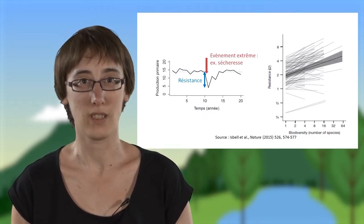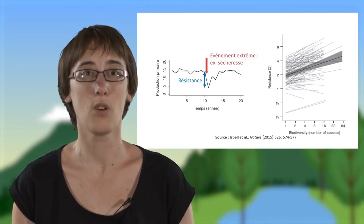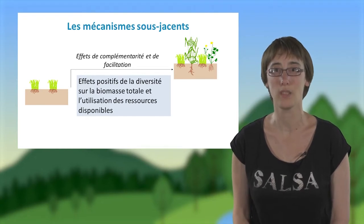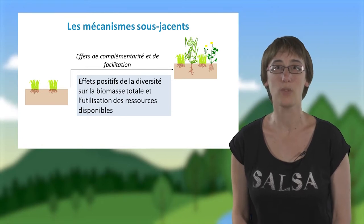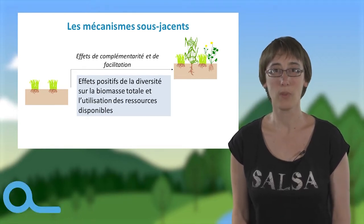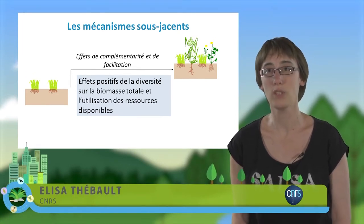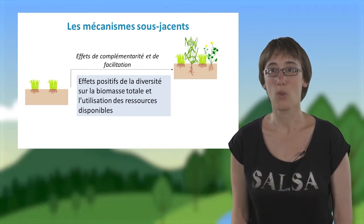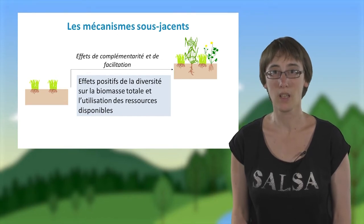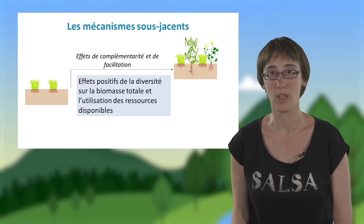Les communautés végétales de forte diversité sont ainsi caractérisées par une plus grande résistance aux événements climatiques extrêmes. Nous avons vu que la diversité affecte aussi bien la production primaire que la stabilité de cette production. Nous pouvons donc nous demander quels sont les mécanismes qui peuvent expliquer ces effets positifs de la diversité. Deux mécanismes sont avancés pour expliquer les effets positifs de la diversité des plantes sur la production primaire et sur la biomasse végétale : des interactions de facilitation entre les plantes et une complémentarité d'utilisation des ressources. Différentes plantes ont par exemple des systèmes racinaires différents et exploitent donc les ressources à différentes profondeurs dans le sol. La complémentarité mène ainsi à une meilleure utilisation des ressources à plus forte diversité, et donc à une plus grande biomasse végétale et à une plus grande production primaire.